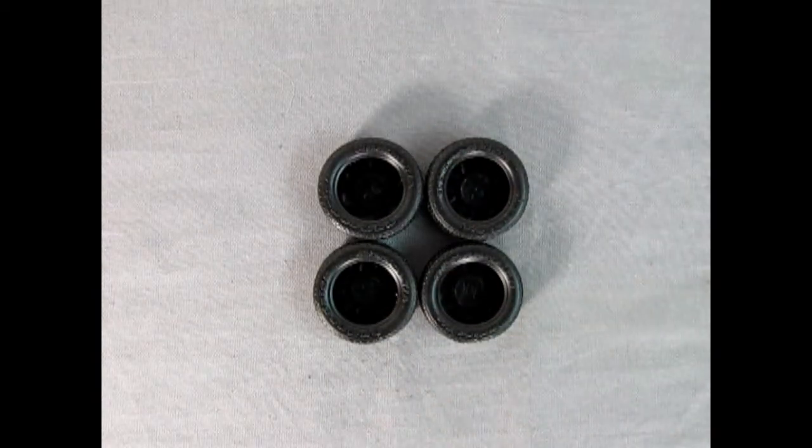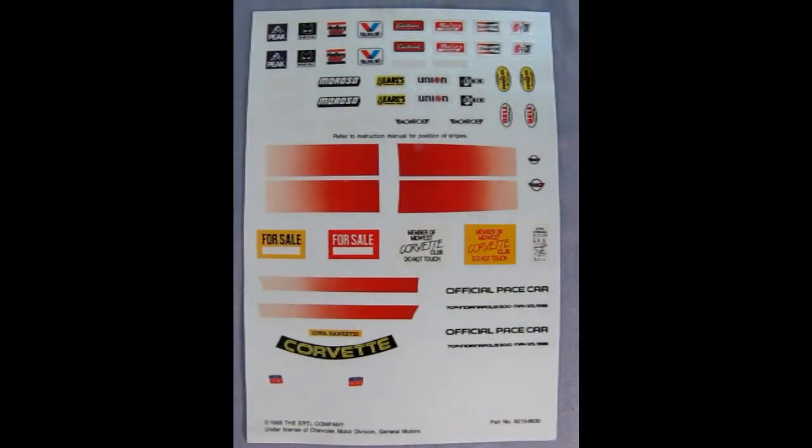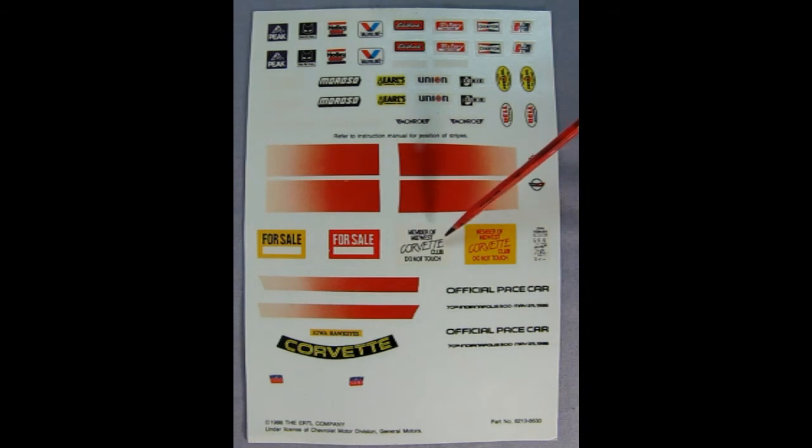Hey everybody, this is Danny the dog once again just to show you this cool decal sheet. Up top you get all the little sponsors like Peak and Mitchell, and then Holly Carbs, Valvoline, Edelbrock, Mallory Ignition, Champion Spark Plugs, Hurst Shifters, Pennzoil, Bell, CB, Union, Earl's, Moroso, and Monroe for your shocks. There's our stripes on here - that's the hood and that's the rear deck lid, or maybe vice versa - and then our side stripes. That's for if you just want the regular car, regular Corvette. They also have these nice little hood details so you don't have to paint. We've got some neat posters and Corvette things. Remember, Midwest Corvette Club, do not touch, and then for sale signs as well. This goes on our windshield for our pace car and so does these on the side doors, and then the official pace car logo. Really cool decals from a time long gone.